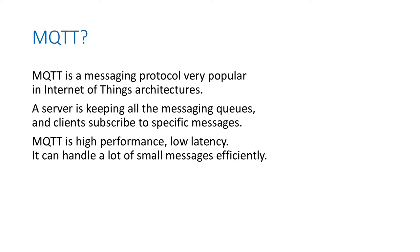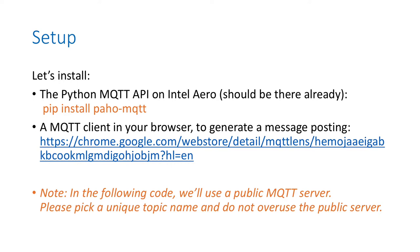Now let's do the same thing with MQTT. MQTT is a messaging protocol very popular in Internet of Things messaging. A server keeps all the messaging queues and clients subscribe to specific topics. MQTT is high performance and low latency — it can handle a lot of small messages efficiently. It also acts as a buffer, so when you have intermittent connections like on a drone, it's very convenient. We install the client part, Paho MQTT with pip, on Intel Aero. In parallel, we can install an MQTT client in our browser to send a message to the server, and the server will forward this message to Intel Aero.